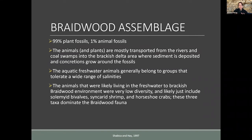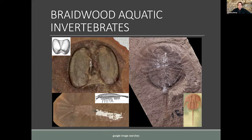The aquatic freshwater animals that might have been living in situ in the Braidwood generally belong to groups that tolerate a wide range of salinities — some bivalves, some syncarid shrimp, and some horseshoe crabs. These are extremely low diversity, dominated by those three taxa. One specific horseshoe crab, Euproops danae, is thought to have been potentially brackish water, freshwater, or even semi-terrestrial, while another horseshoe crab in the Maison Creek, Paleolimulus, is more likely marine.